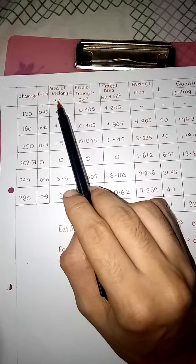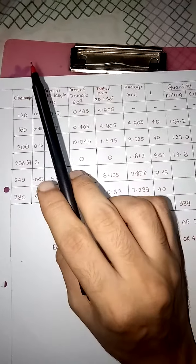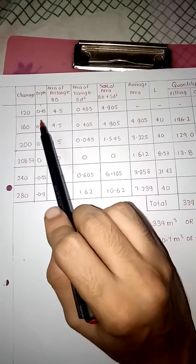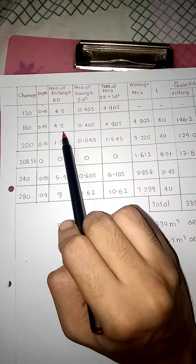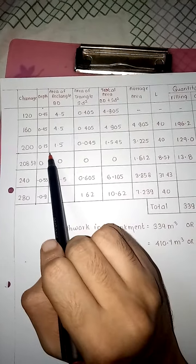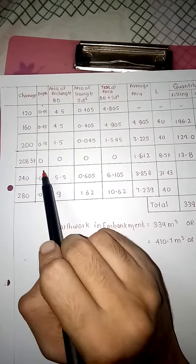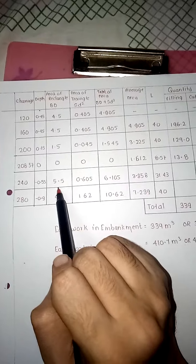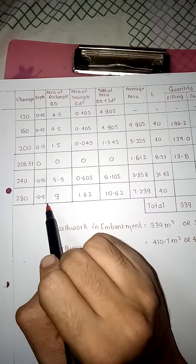Area of rectangle B×D: B given in question is 10. 10 × 0.45 = 4.5, 10 × 0.45 = 4.5, 10 × 0.15 = 1.5, 10 × 0 = 0, 10 × 0.55 = 5.5, 10 × 0.9 = 9.